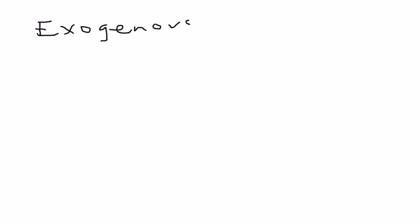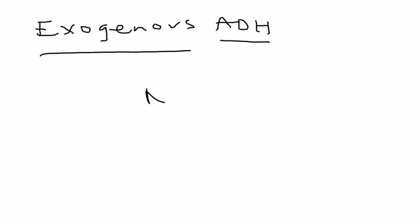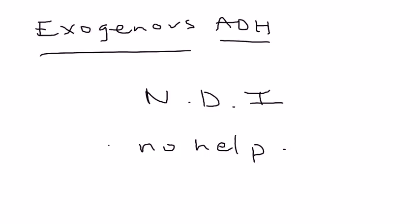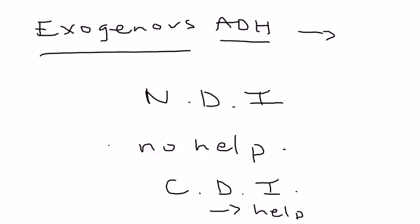The next thing you do is give ADH to see if that's going to help. In nephrogenic diabetes insipidus, there is no help — there is no change, because the kidney is unresponsive. Interestingly, when you give exogenous ADH, it does help central diabetes insipidus. You can find a video about that on our YouTube channel.